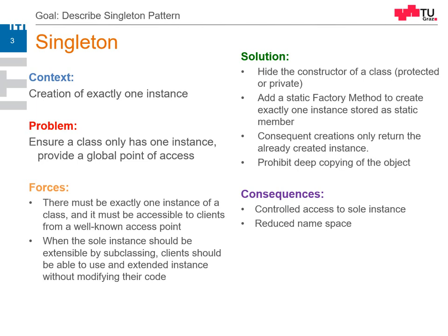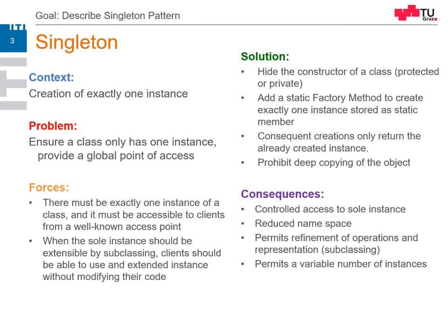So we don't have a constructor for every object. It permits that we can refine the class which we want to have as a singleton. If we seal the object or make the object itself static, it cannot be derived anymore, though subclassing is still possible. It permits a variable number of instances and it's more flexible than static class operations, because making the whole class static limits the options that programming languages otherwise allow with normal class definitions.